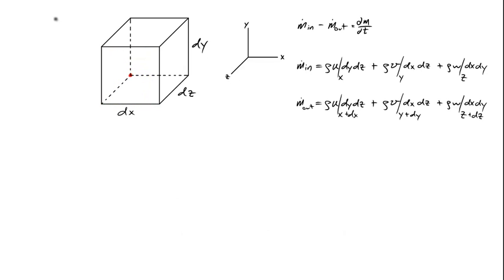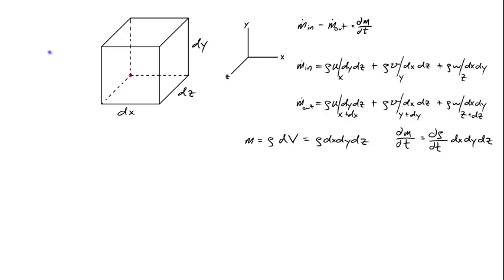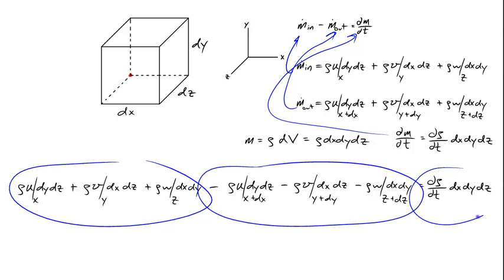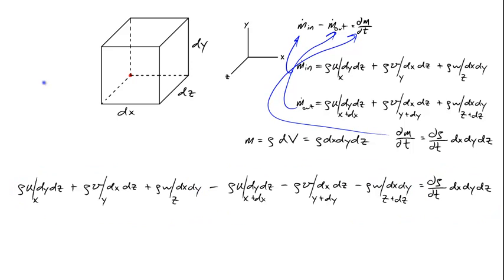With those equations set aside, the mass inside the cube is simply the density of the fluid times the differential volume: rho times dx dy dz. Taking the time derivative, dm/dt equals (d rho/dt) times dx dy dz. Now substituting the expressions for mass flow in, mass flow out, and dm/dt into the conservation of mass equation: mass entering minus mass leaving equals the rate of mass accumulation within the control volume.